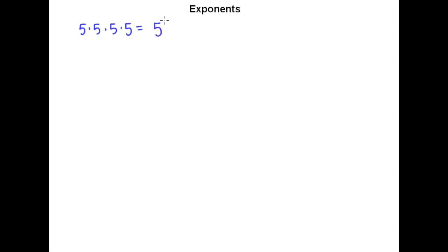In this lesson we're going to talk about exponents. Exponential expressions are used as a shorthand way of indicating repeated multiplication. So if I wanted to multiply 5 by itself 4 times, I can write it out, but a shorthand way would be to write 5 and then put a small 4 to the right and up toward the top of your 5. And this means the same thing as 5 times itself times itself times itself.